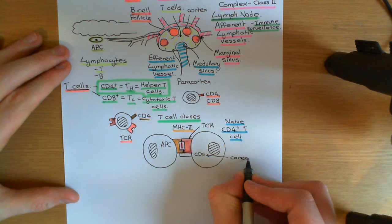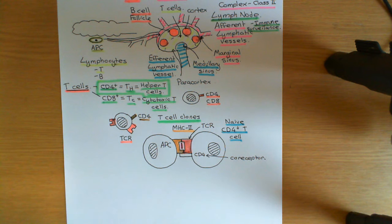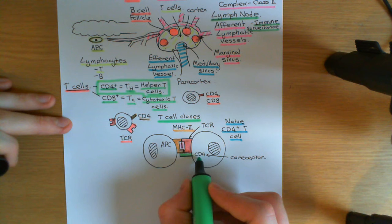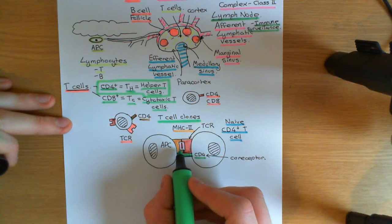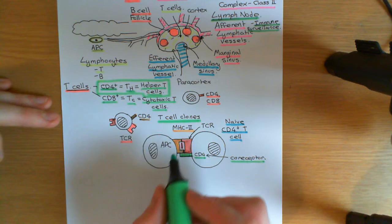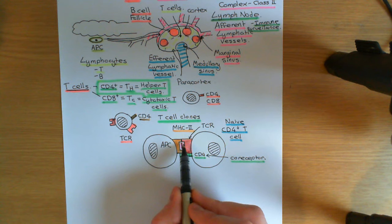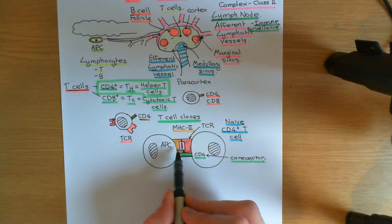The MHC class II peptide fragment complex binds to the T cell receptor, and the CD4 molecule on the surface of the T cell also binds to the MHC class II complex. This is the reason that antigen presenting cells presenting antigen fragments on MHC class II can only activate CD4 positive T cells — because CD4 binds to MHC class II, whereas CD8 binds to MHC class I. It's essential that you get not just the T cell receptor binding, but also the CD4, which we call the co-receptor. CD4 binds to the side of the MHC class II complex, not to the portion where the peptide fragment is displayed.